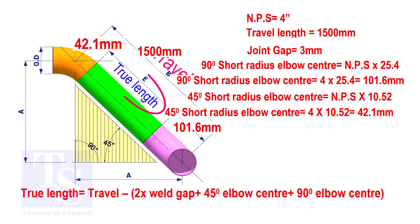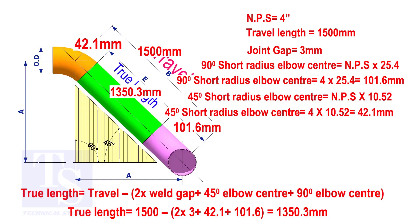To calculate the true length of the pipe, subtract two weld gaps plus both elbow centers from the travel length. The true length of the pipe is 1350.3 millimeters.